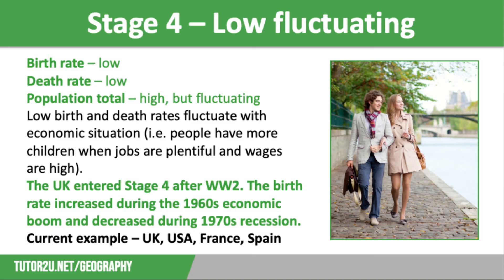In the UK, the average age of mothers giving birth to their first child is 30.9 years, and the fertility rate is 1.56 births per woman. This means that usually in HICs, the population growth is down to immigration rather than natural increase. The UK entered Stage 4 after the Second World War. The birth rate increased during the 1960s with an economic boom, and then decreased during the 1970s due to recession.